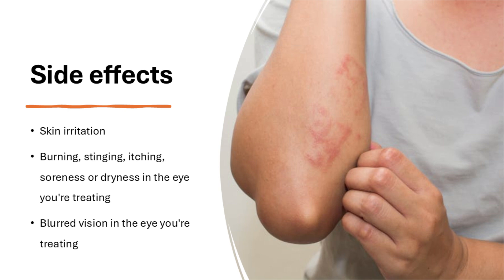Side effects of eye drops: These common side effects of Fusidic Acid eye drops happen in more than 1 in 10 people. They include burning, stinging, itching, soreness or dryness in the eye being treated, and blurred vision in the treated eye. Keep using the eye drops, but talk to your doctor if these side effects bother you or do not go away.